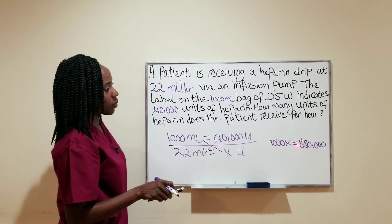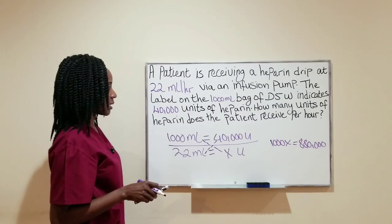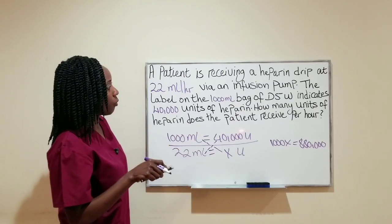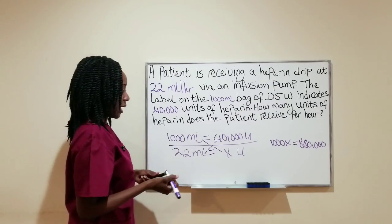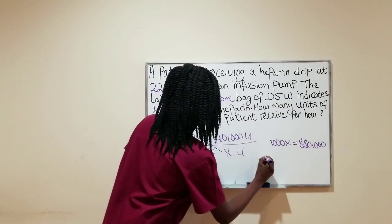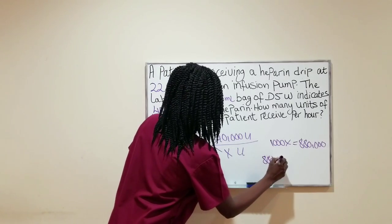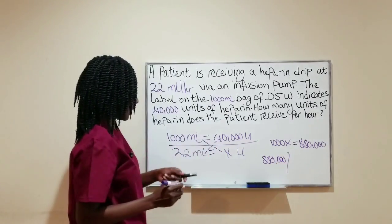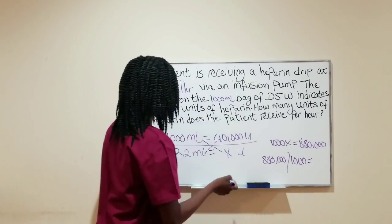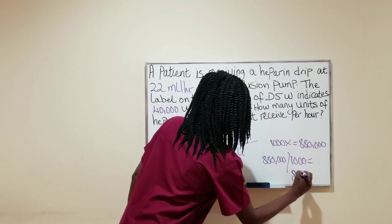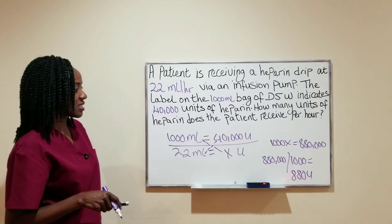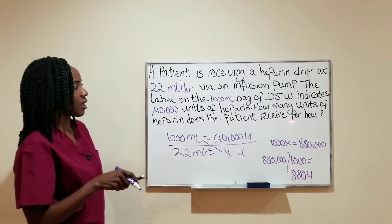So 1,000X equals 880,000. We have to do one more step because we're trying to find out how many units per hour, so I'm going to divide 880,000 by 1,000. That is going to equal 880 units — the patient is receiving 880 units per hour.